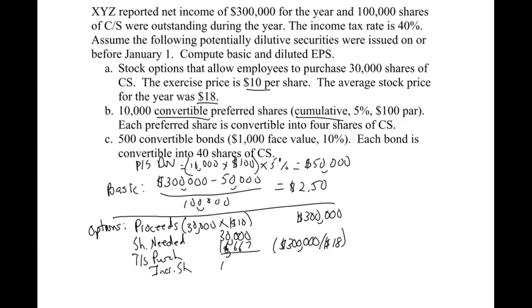So incremental shares, 13,333. Now, if you want to be consistent with how we did it earlier, put times 12 twelfths. Now, remember, I don't write out the per share effect because the per share effect is zero.